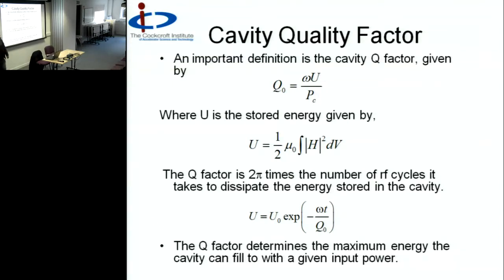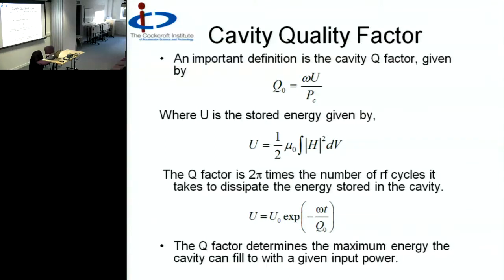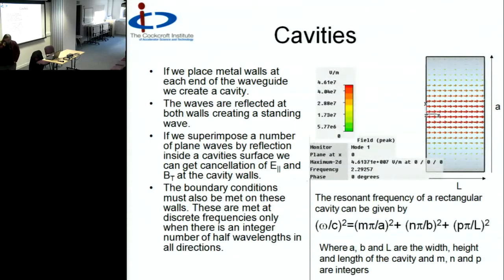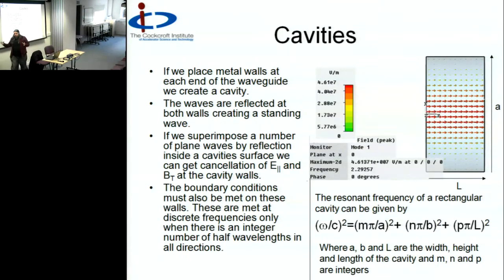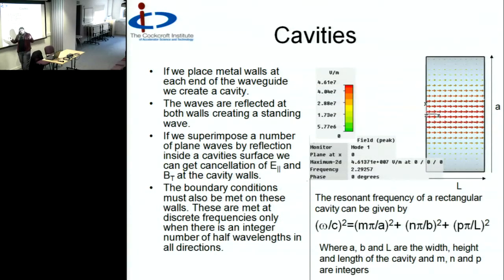If you've got a Q factor of 1000, it takes about 6000 RF cycles to dissipate the energy - it's an exponential decay, so it never really empties. The Q factor determines the maximum energy the cavity will fill to for a given input power. It's very important because it tells you how much energy is stored relative to the power in the cavity, and you want the Q factor to be as large as possible. A cavity is essentially like a waveguide with shorting plates on either wall, so the field is confined as a standing wave bouncing backwards and forwards inside.